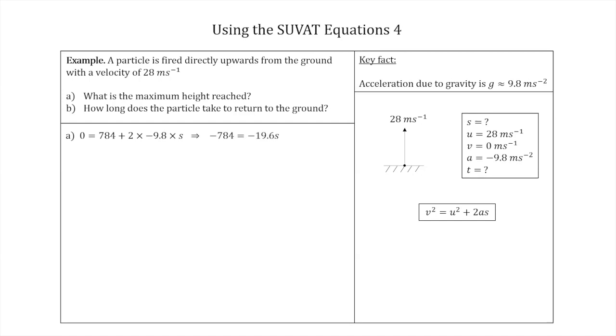So we just need to rearrange a bit. If you rearrange this equation, you should get that minus 784 is equal to minus 19.6 S, which gives us that S equals 40 meters. So that means the particle flew 40 meters up into the air before it started to come back down.